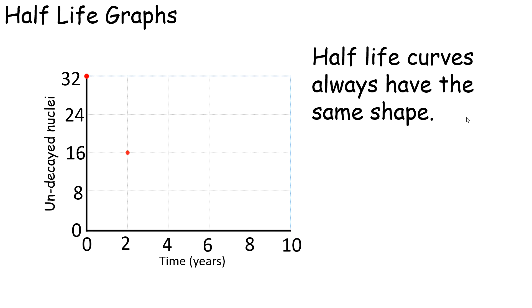We can represent this on the graph. If we start off with 32 undecayed nuclei and we wait two years, we end up getting 16. Four years we're left with eight undecayed nuclei, and eight years we end up with 24 decayed and eight undecayed. Half-life curves always have this negative exponential shape, so it curves downwards towards the x-axis but it never actually theoretically touches it, which is very interesting.